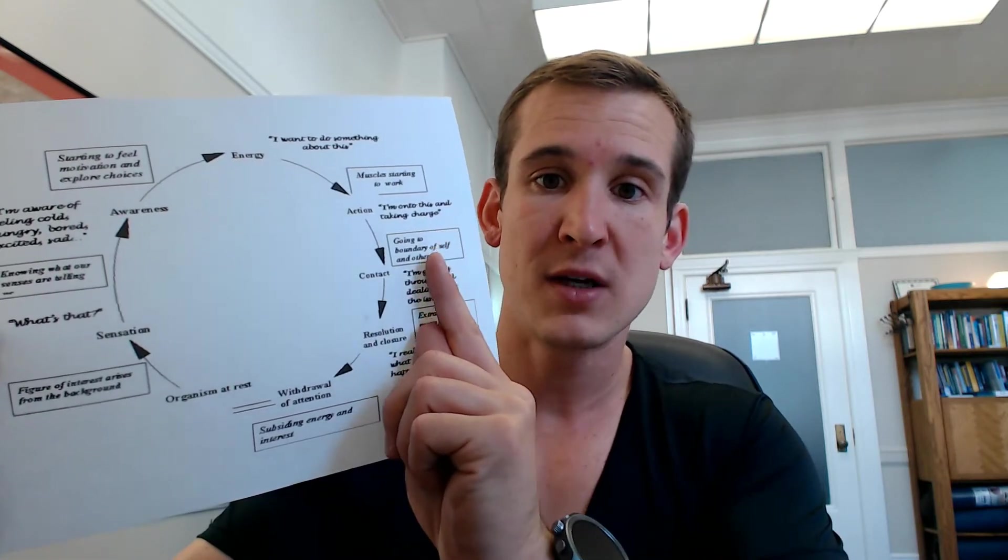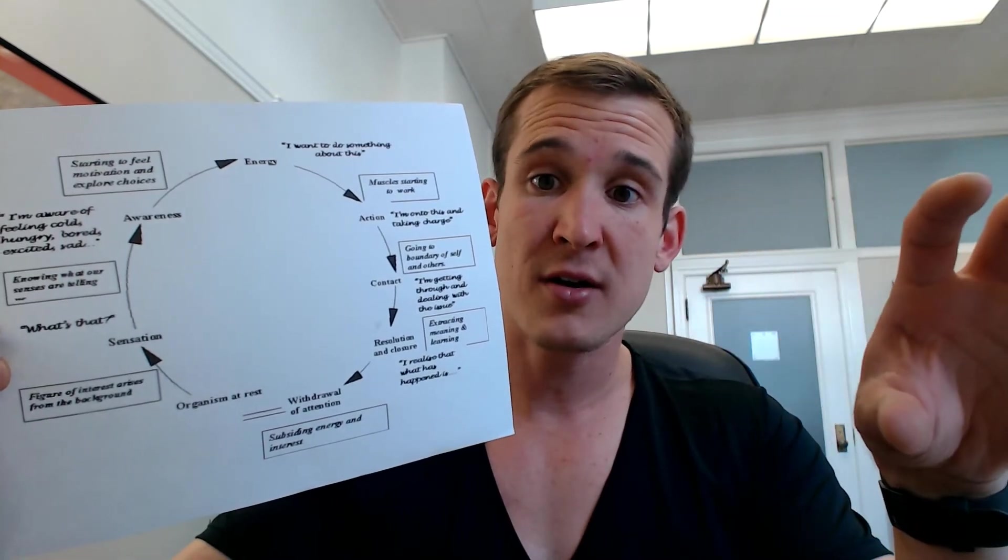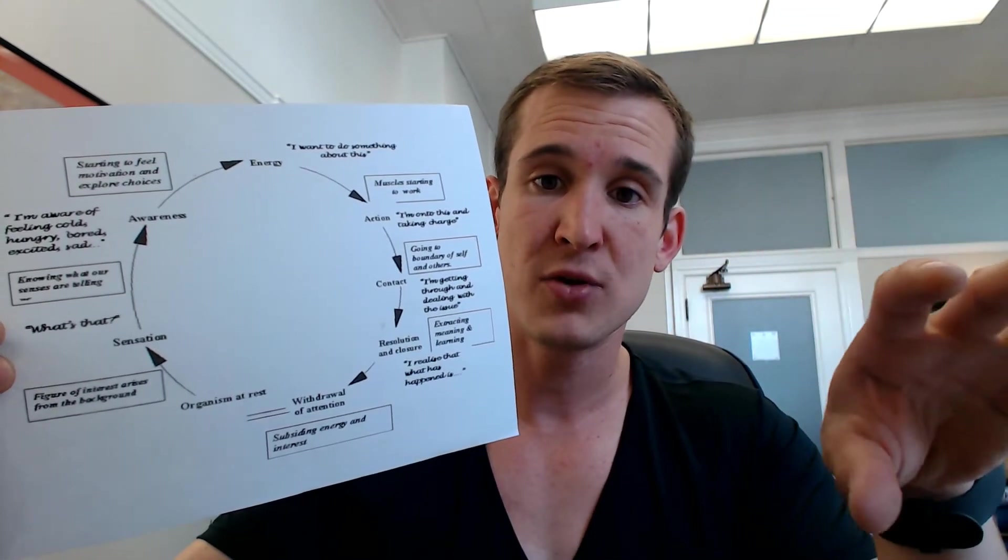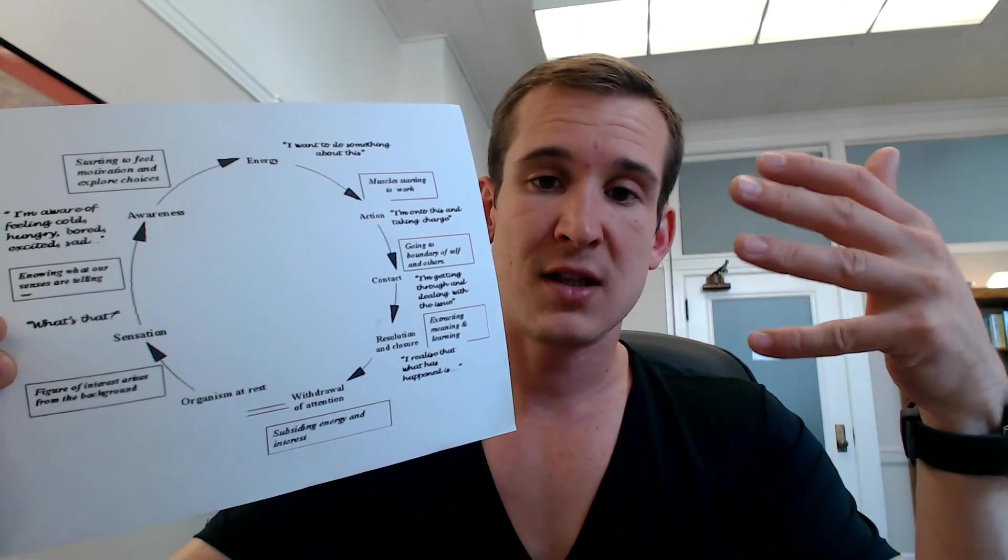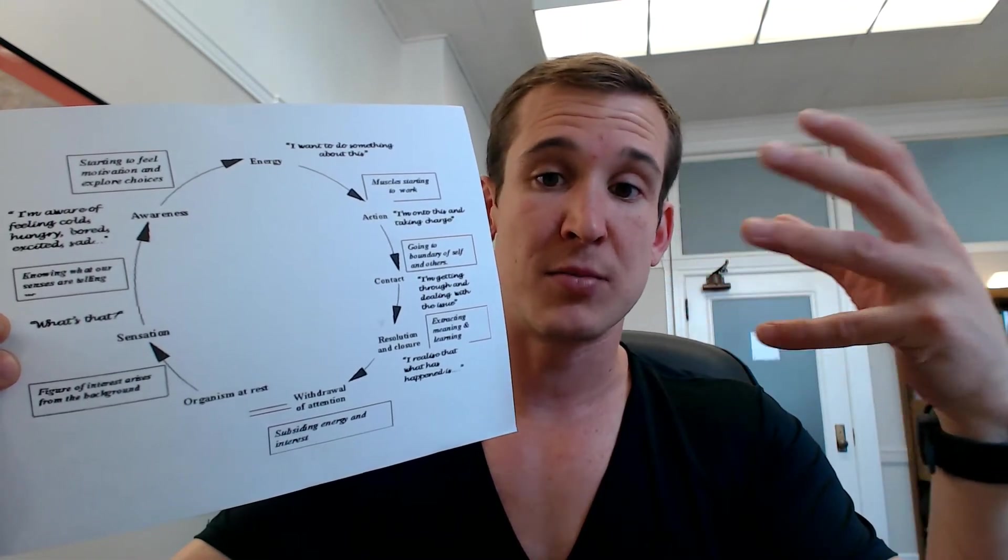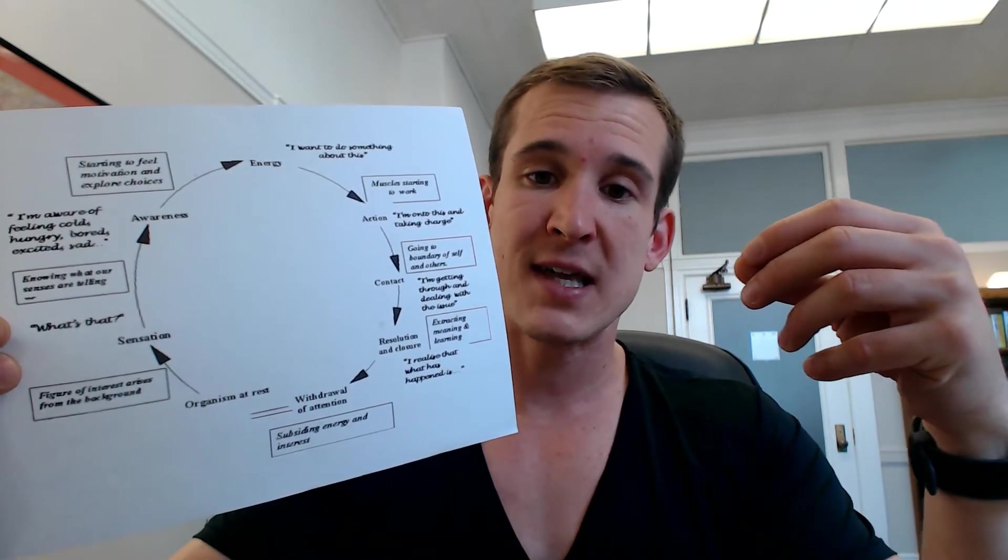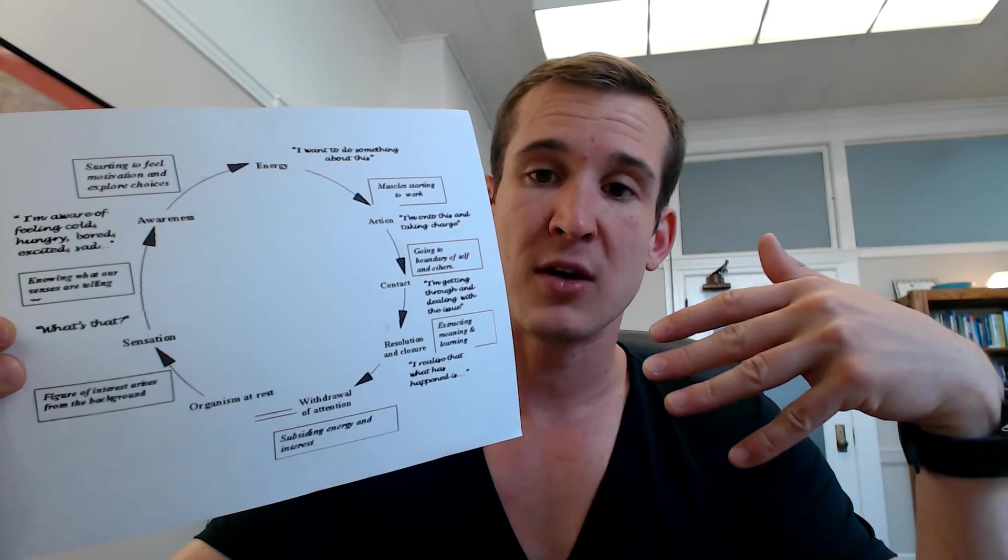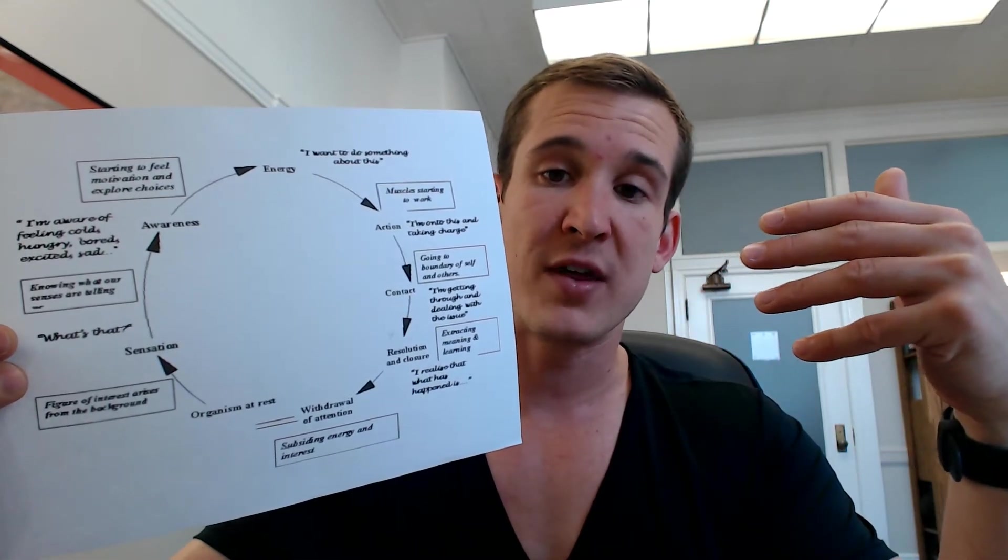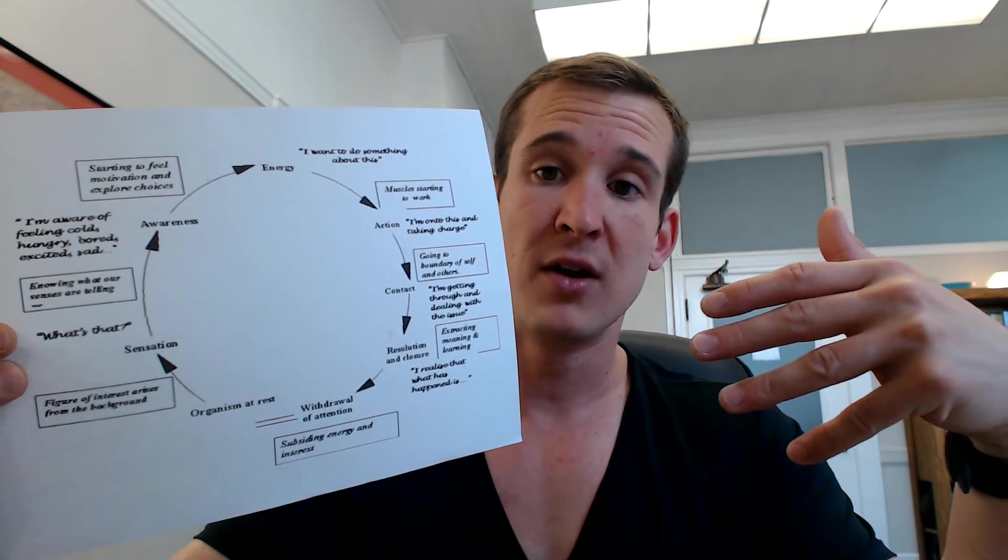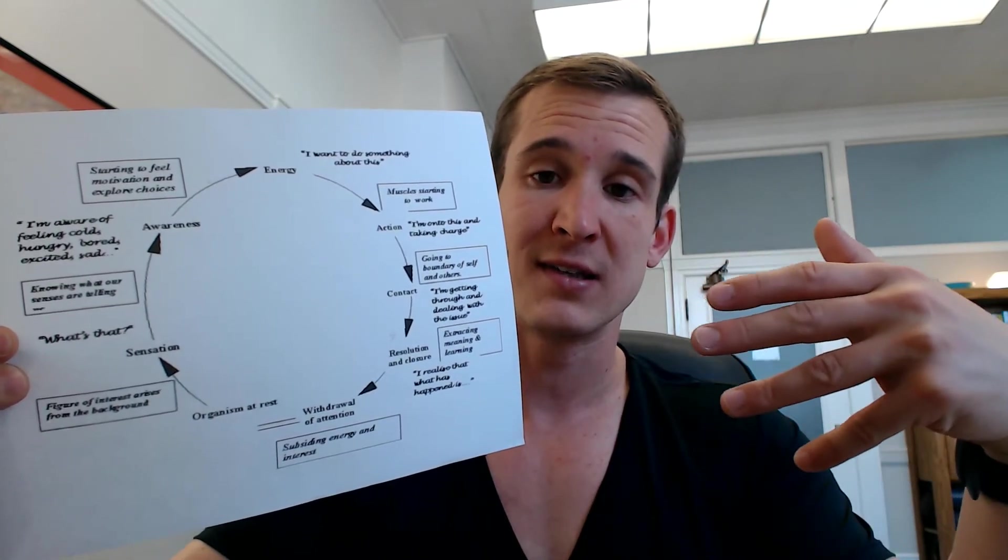I want to do something, and then I'm doing it, and so we go to the boundary between us and that other. It could be another person, it could be that food, and we make contact. Now, most often, this concept is applied to interpersonal dynamics and making contact with other people, and sometimes the intensity of that can create anxiety at the boundaries. Different people do a lot of different things with the anxiety that they feel when they have interpersonal connections, especially in social anxiety and stuff like that.